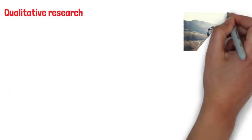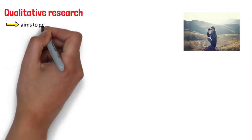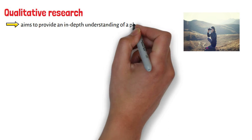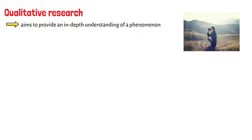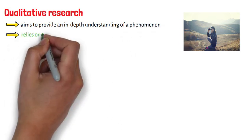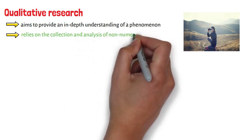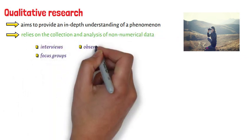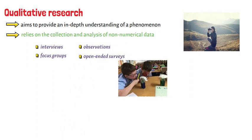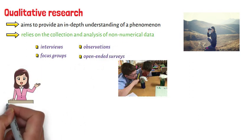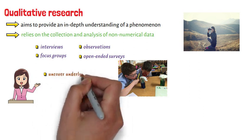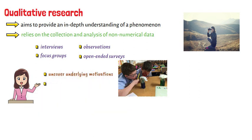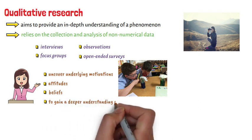On the other hand, qualitative research is exploratory and aims to provide an in-depth understanding of a phenomenon. Qualitative research relies on the collection and analysis of non-numerical data such as interviews, focus groups, observations, and open-ended surveys. This approach is used to uncover underlying motivations, attitudes, and beliefs, and to gain a deeper understanding of social and cultural contexts.